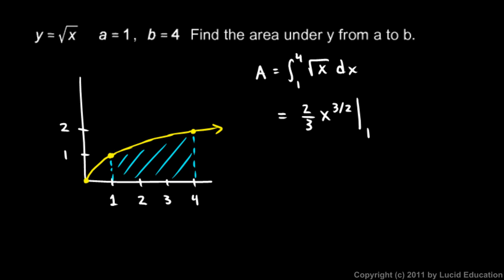And we evaluate that from 1 to 4. And so what that means is we take the 4 and plug it in there for x, minus this expression with the 1 plugged in there for x. So that's going to look like this. 2 thirds times 4 to the 3 halves, minus 2 thirds times 1 to the 3 halves.